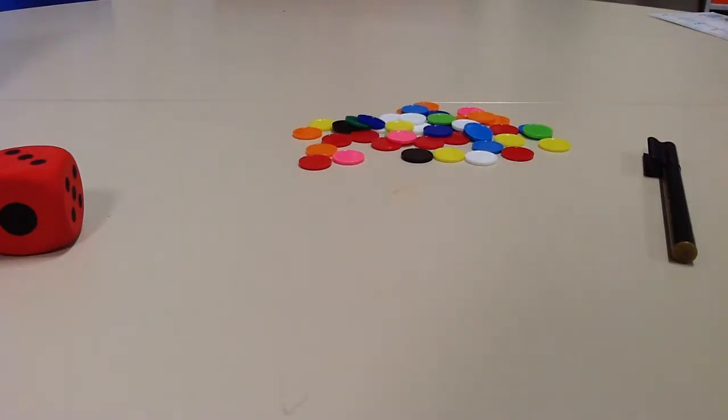You can see I've got heaps of counters here, but I want to count them carefully and I want to count them quickly. So I'm going to make as many groups of ten as I can and then count how many tens I have.